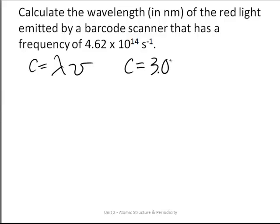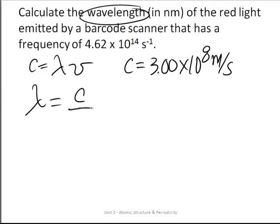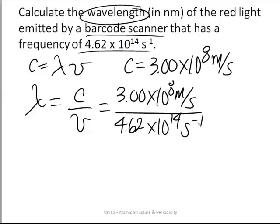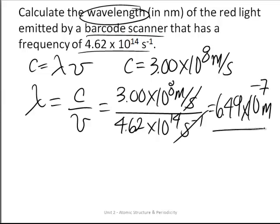We know that the speed of light is equal to 3.00 × 10^8 meters per second. If we want to calculate the wavelength, we'll rearrange this: wavelength equals c over ν, which equals 3.00 × 10^8 meters per second divided by—we're looking for the wavelength of a barcode scanner that has a frequency of 4.62 × 10^14 reciprocal seconds. The seconds are going to cancel out, so the number that we calculate here is going to be in meters. If we do this in our calculator, 6.49 × 10^-7 meters is the value we calculate, three sig figs for both those values.